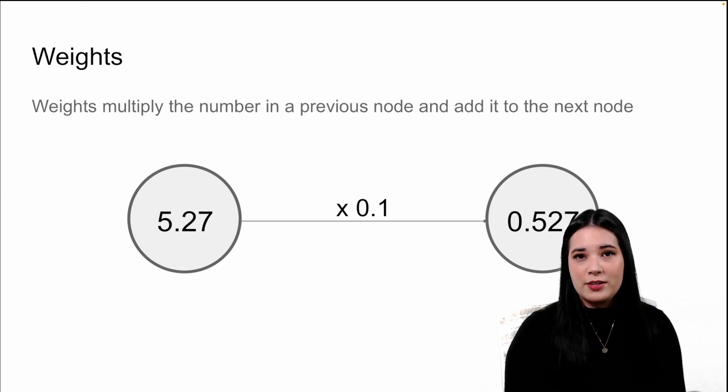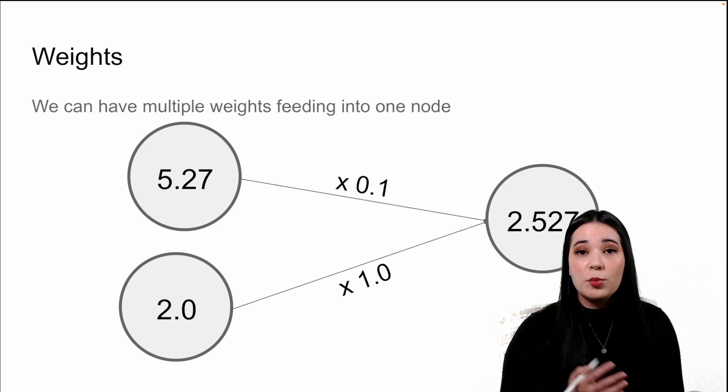The next component we need to talk about are weights. Weights connect two nodes together. In order to get the value in the second node, we take the value in the first node, multiply it by the weight, and add it to this second node.